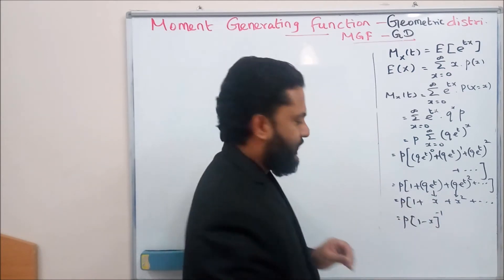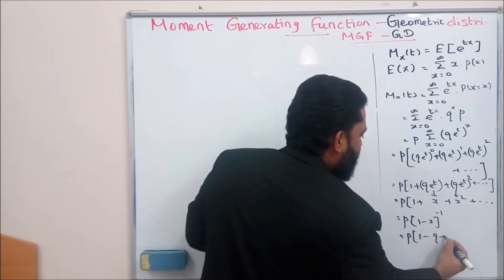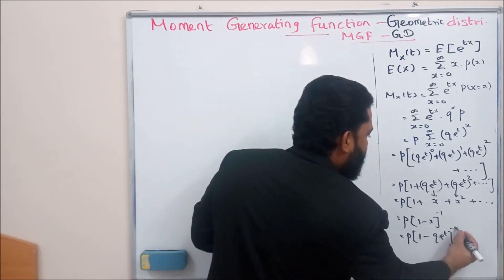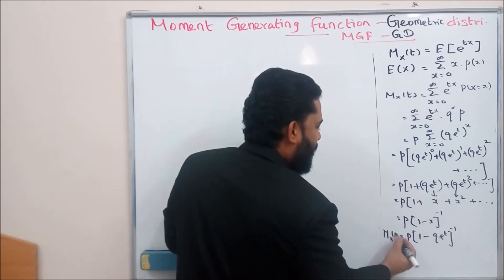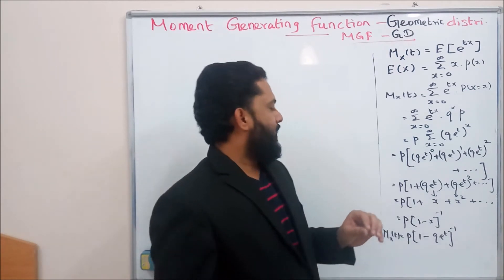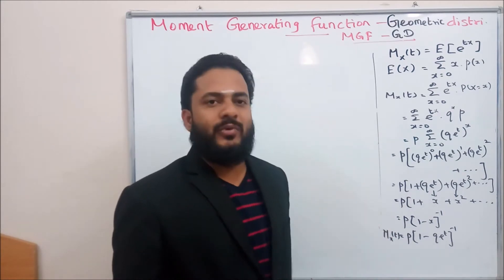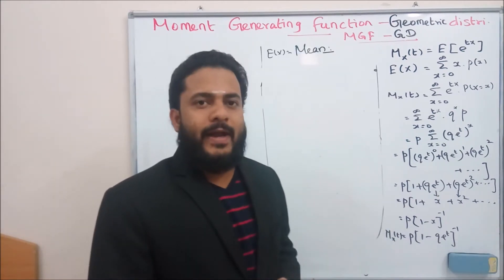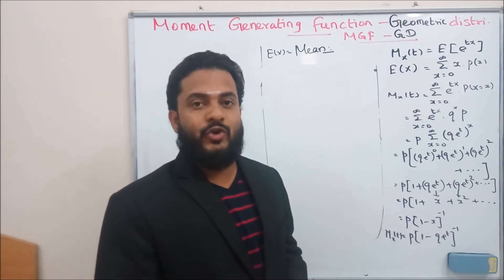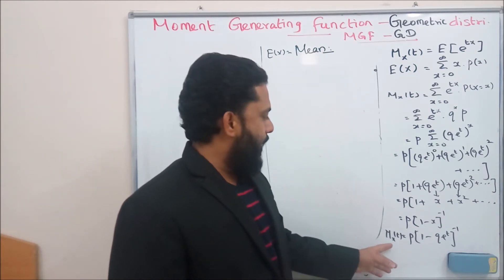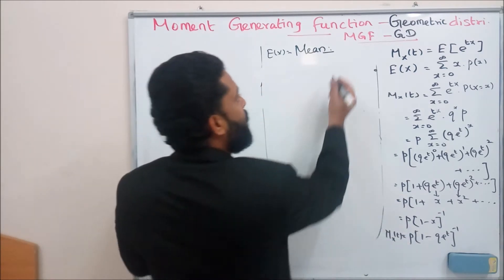Substituting, we get mx(t) = p times (1 - qe^t)^(-1), which is the moment generating function of the geometric distribution. Now let us find the mean, variance, and standard deviation of the geometric distribution.